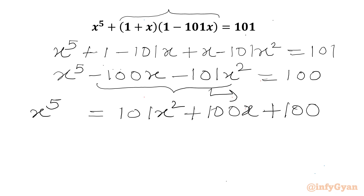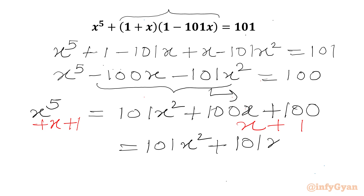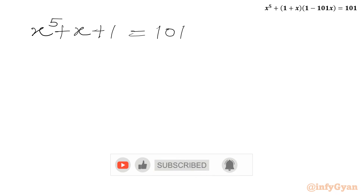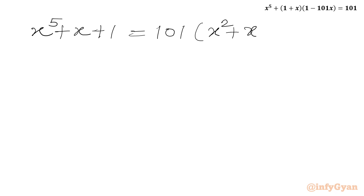Now I will add x plus 1 to both sides. So I will write x plus 1 on this side also. You can see RHS will become 101x square plus 101x plus 101, and LHS will be x power 5 plus x plus 1. Now we can take 101 common from RHS, giving us x power 5 plus x plus 1 equal to 101 times x square plus x plus 1.